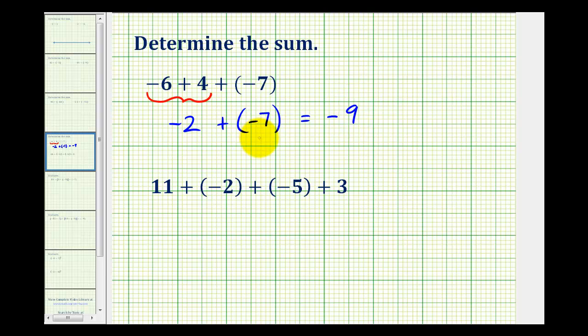Or using the more formal rules of integers, because we're adding integers with the same sign, we add the absolute values and then keep the sign of the original integers, which would give us a sum of negative nine.